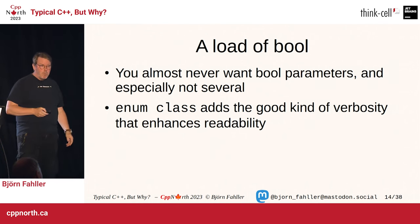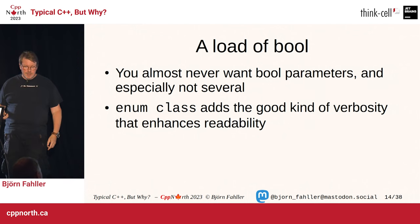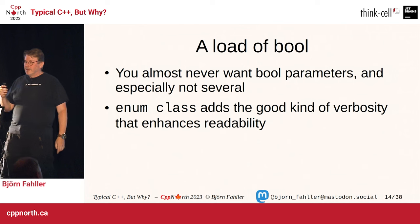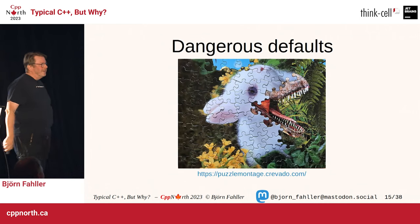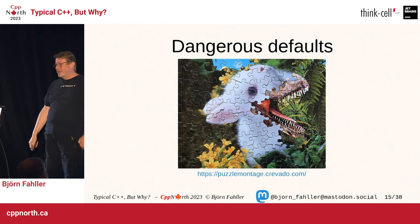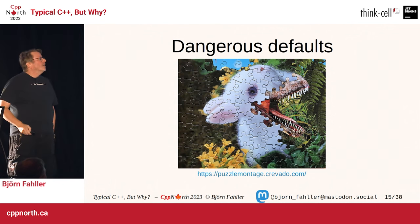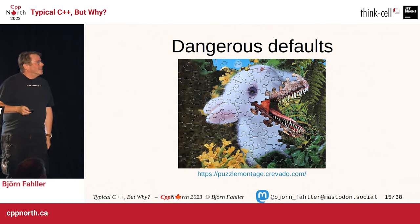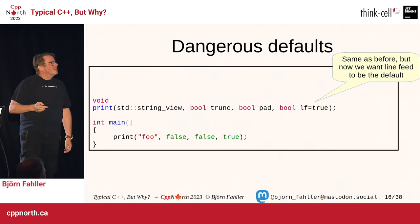That's a good thing. The function signature is still a bit of an eyesore; I haven't figured out a naming convention for the parameters that looks great. It's ugly, but I think it's worth the ugliness because you gain so much more. So: you almost never actually want bool parameters — especially not several bool parameters in one function. Enum class adds the good kind of verbosity that enhances readability, and since they are unique types, wrong argument order becomes a compilation error.